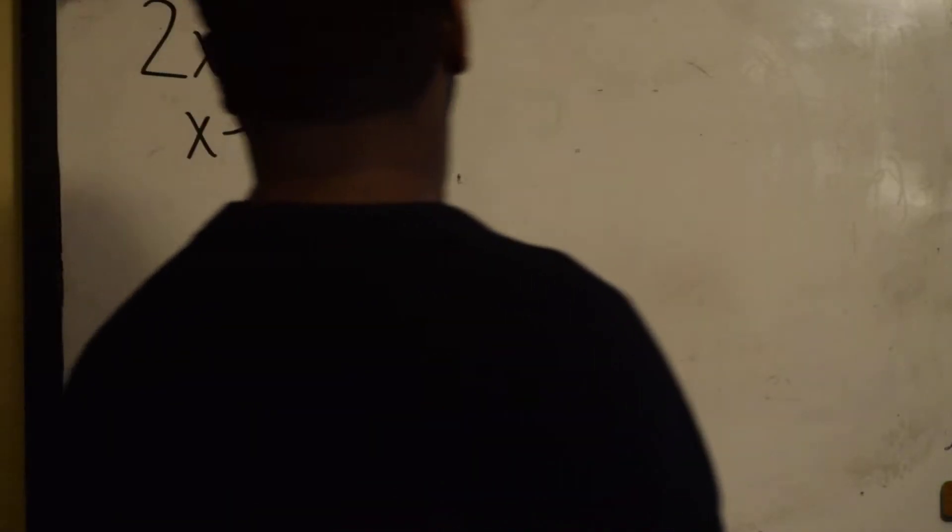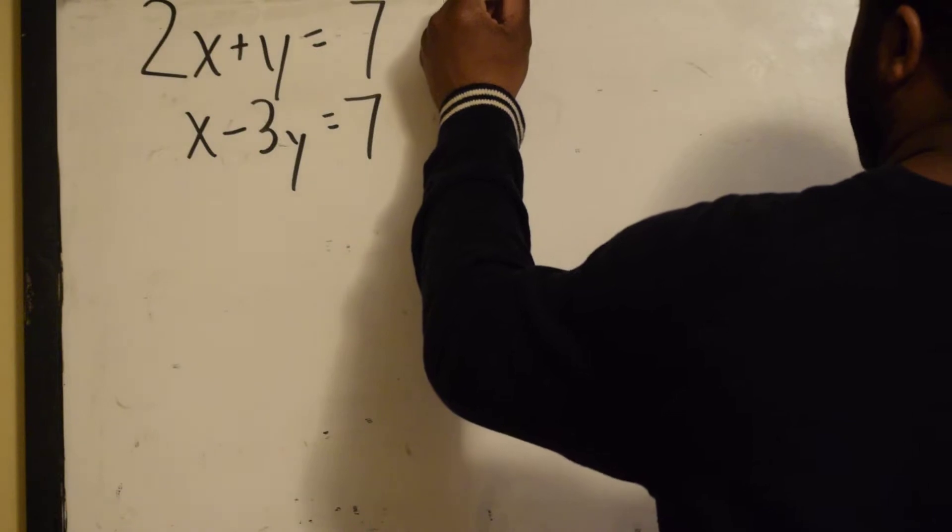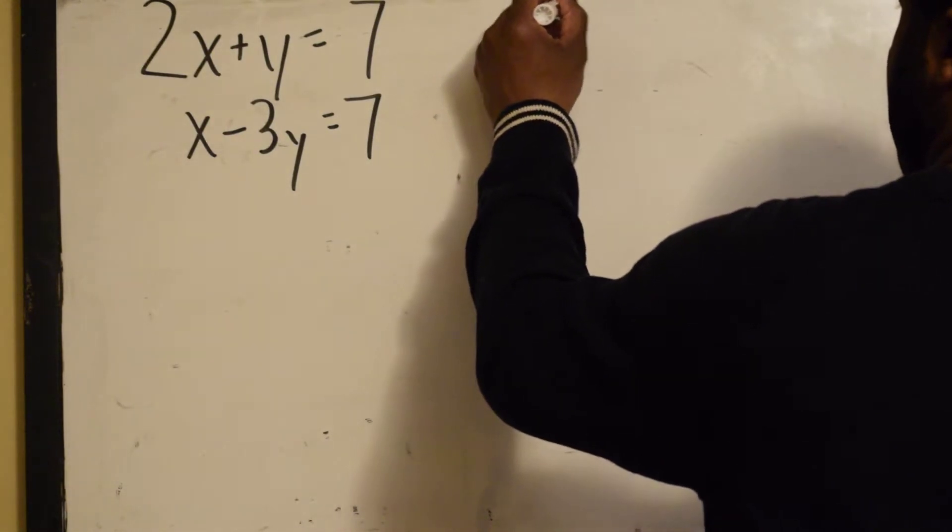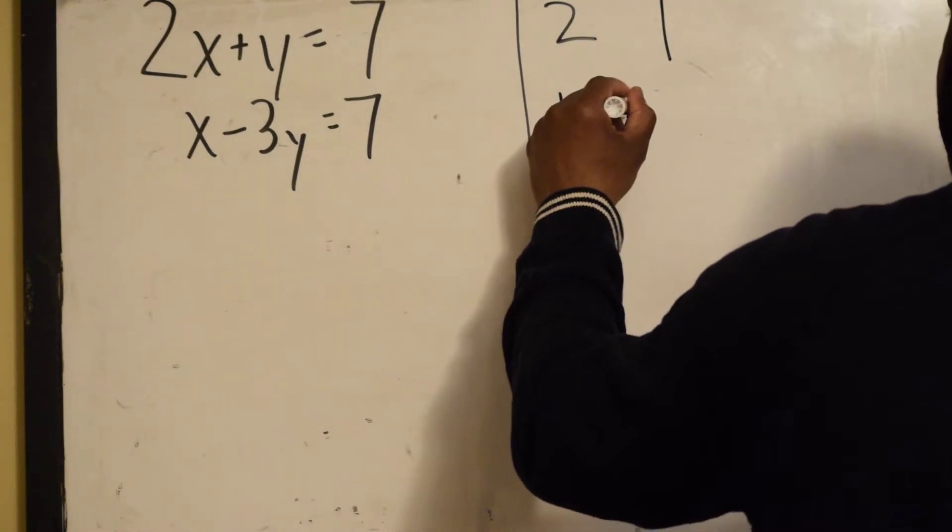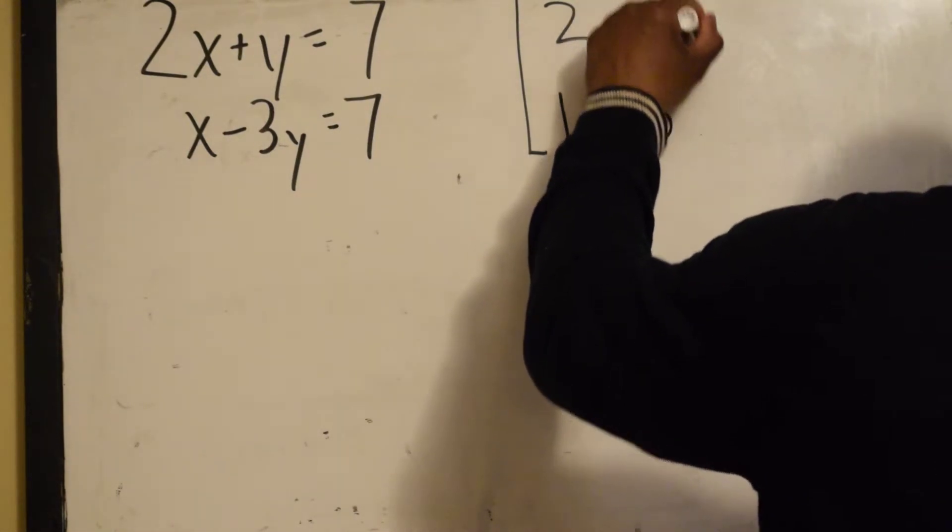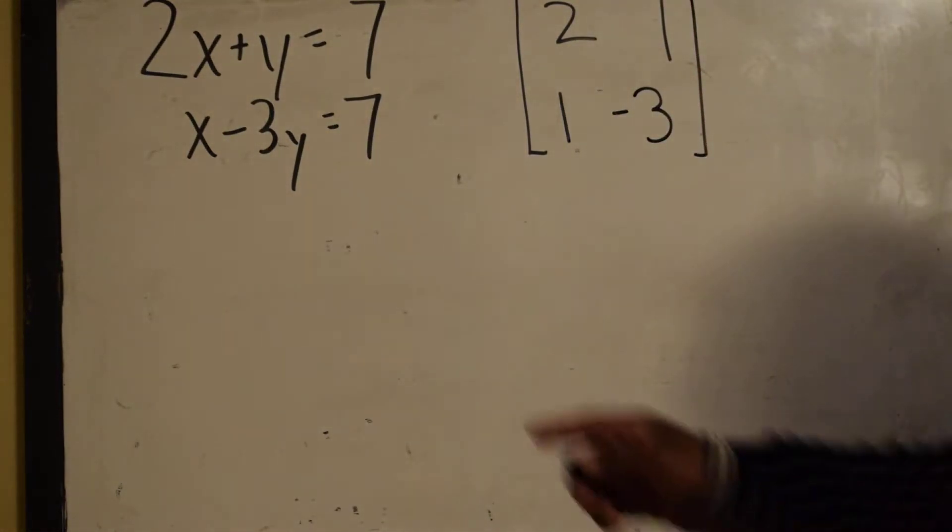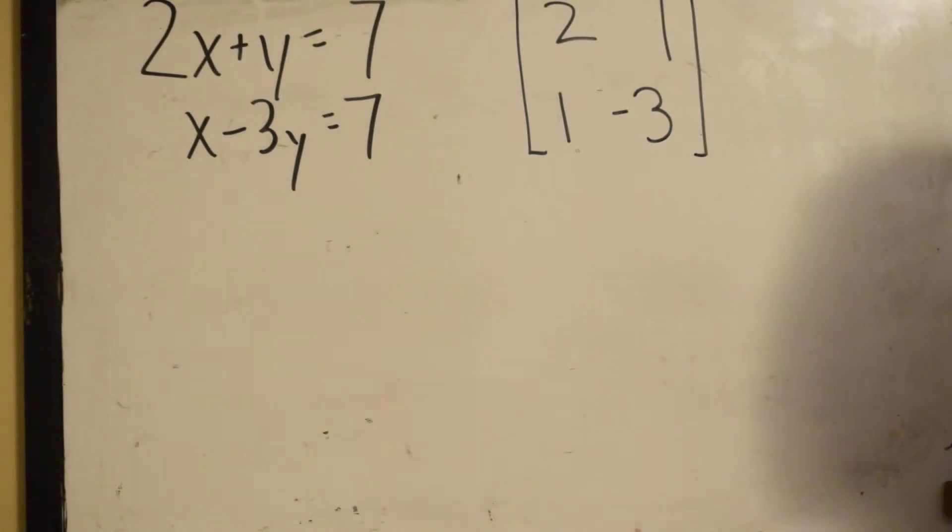Now first we write the coefficient matrix. That would be 2, 1, 1, negative 3.